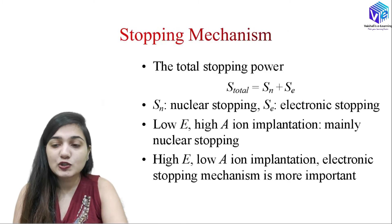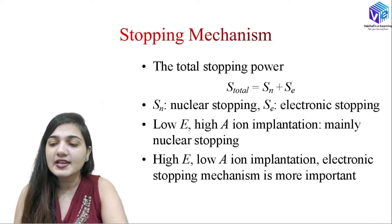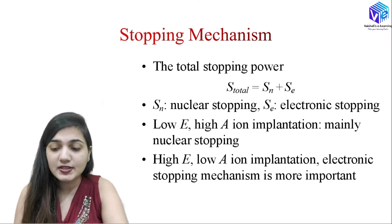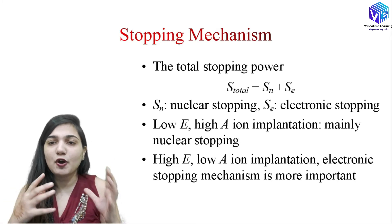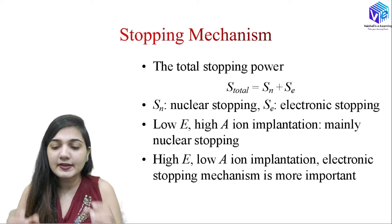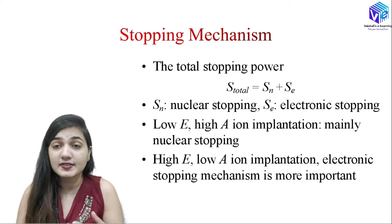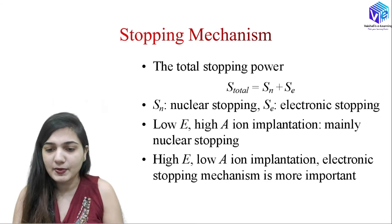The total stopping power is the combination of nuclear stopping plus electronic stopping, where Sn represents nuclear stopping and Se represents electronic stopping, so total stopping = Sn + Se. If we have low energy and high atomic mass, nuclear stopping will be predominant. If we have high energy and smaller atoms, then electronic stopping will overpower nuclear stopping.